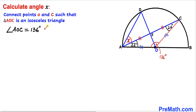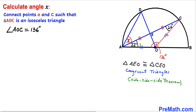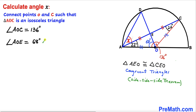Angle AOC turns out to be 136 degrees. Moreover, triangle AEO and triangle CEO are congruent triangles, so angle AOE must equal angle COE. Since the whole angle AOC is 136 degrees, each half is 68 degrees. Therefore angle AOE turns out to be 68 degrees.